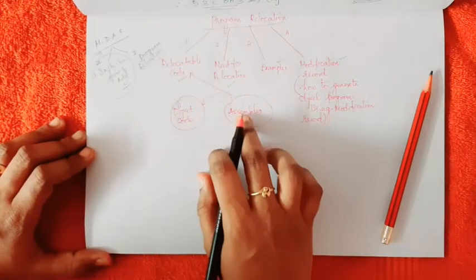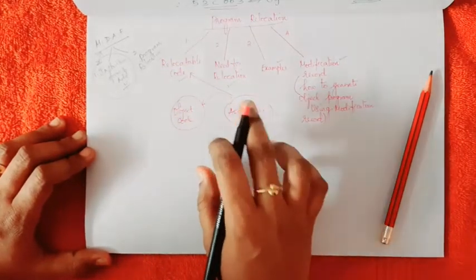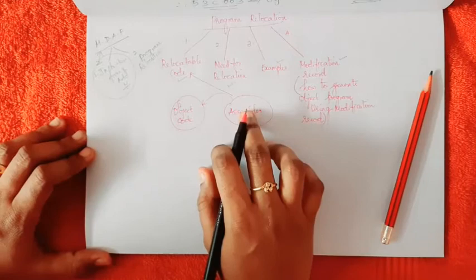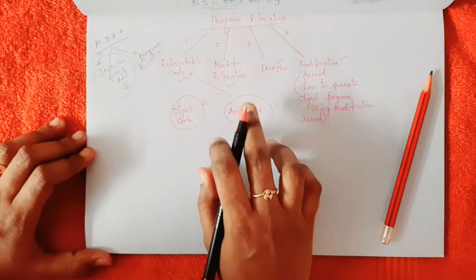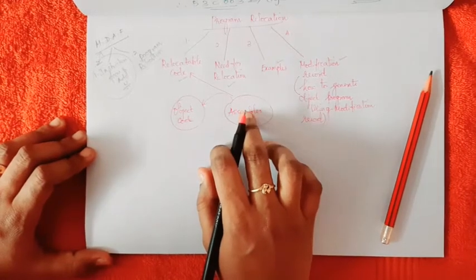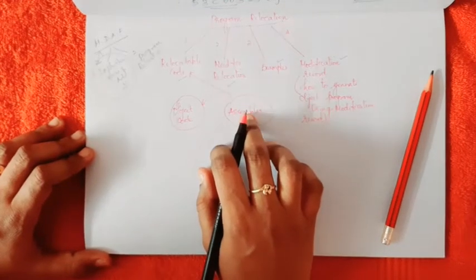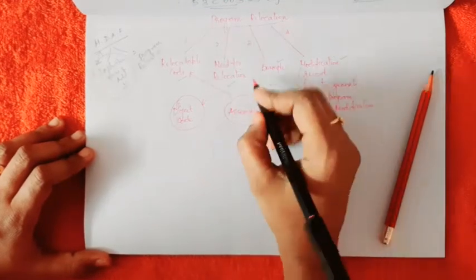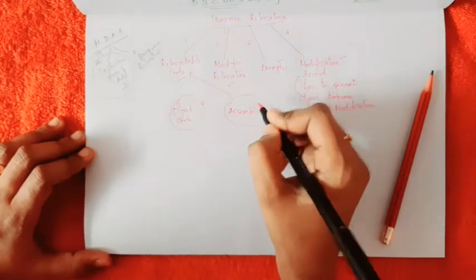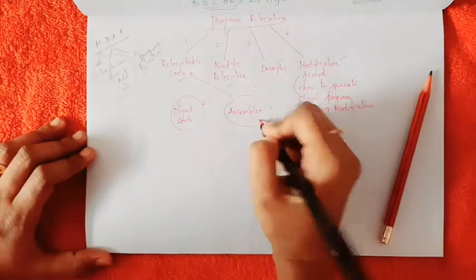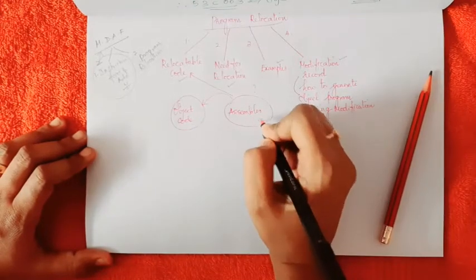During assembling, the assembler assumes the relocatable code starting address would be 0, because it does not know where the code is loaded in memory.